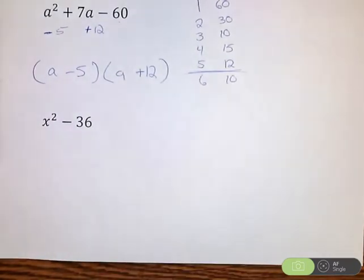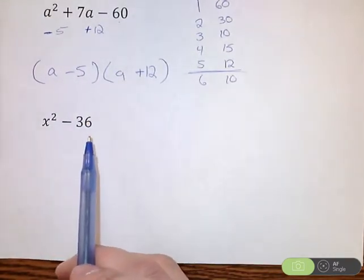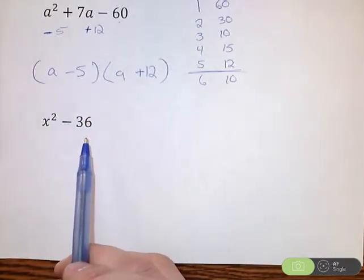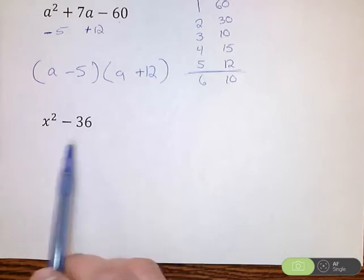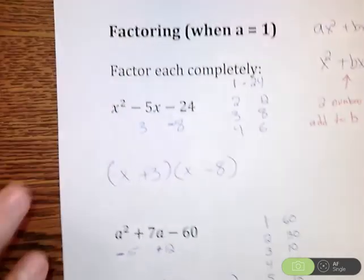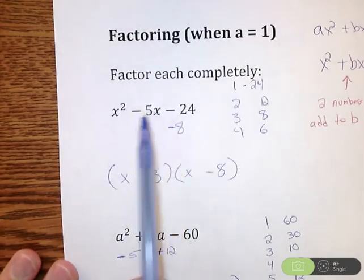All right. Final problem here on the video is we're going to have x squared minus 36. All right. First thing I'm noticing here is I have two terms. I'm not seeing where in the world is that middle term.